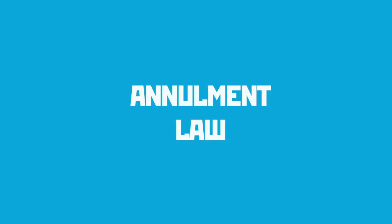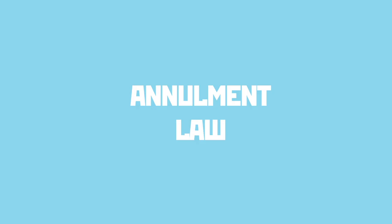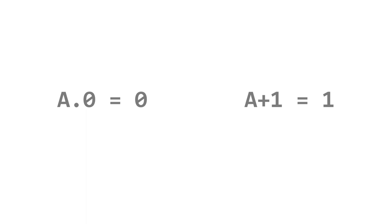The first rule we'll look at is the annulment law. This is a reasonably straightforward one. You'll see that the law states that A AND 0 can be simplified to just 0. The 0 means OFF. And A OR 1 is just 1.